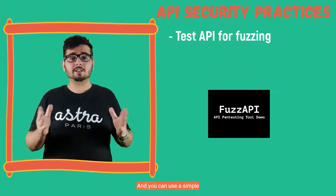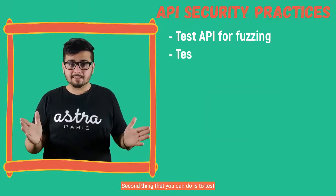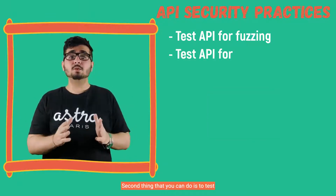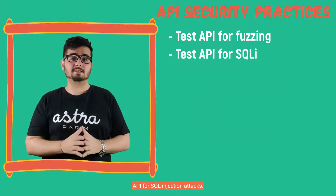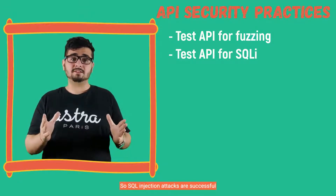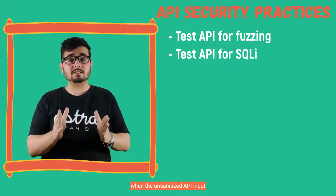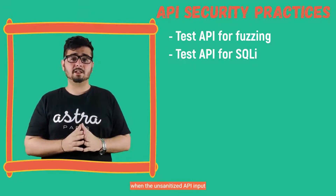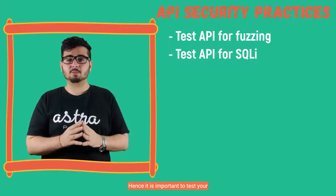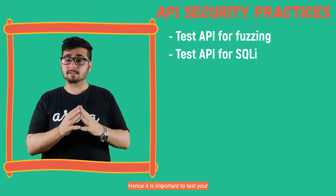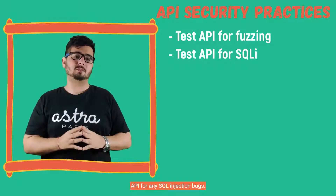You can use a simple tool like Fuzz API for that. The second thing you can do is to test API for SQL injection attacks. SQL injection attacks are successful when the unsanitized API input is processed by the database. Hence, it is important to test your REST API for any SQL injection bugs.